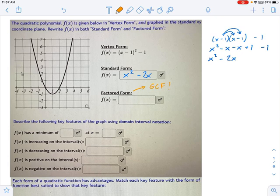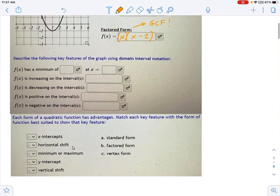So what's the greatest common factor here? It's just x. You pull out an x, and what's left behind? It's going to be x minus 2. So there's my factored form. And now we're ready to move on to the rest of this problem, which is describing some key features of the graph.